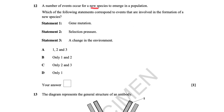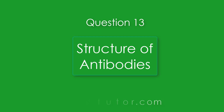A number of events occur for a new species to emerge in a population. Which statements correspond to events involved in the formation of a new species? Statement one: gene mutation. Statement two: selection pressure. Statement three: a change in the environment. All of these correspond to events involved in the formation of a new species. The answer is A.